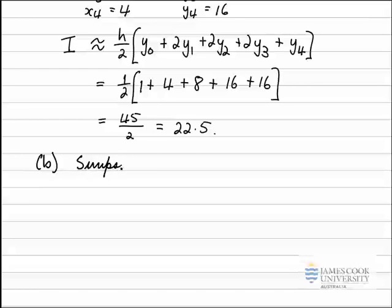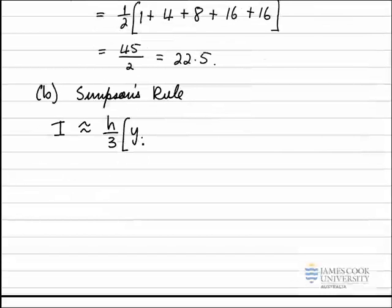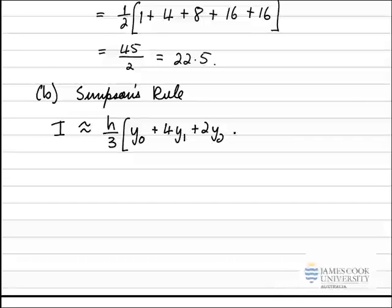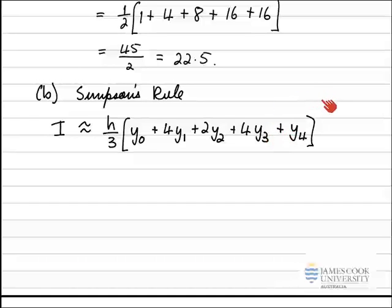For Simpson's rule with N = 4, the integral is approximated by (H/3)[y₀ + 4y₁ + 2y₂ + 4y₃ + y₄]. The rule is H divided by 3, the first and last values have coefficient 1, and the middle values alternate with coefficients 4, 2, 4. With N = 4 we have 5 values to deal with.